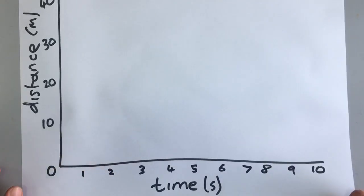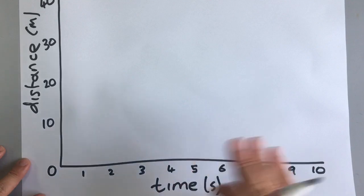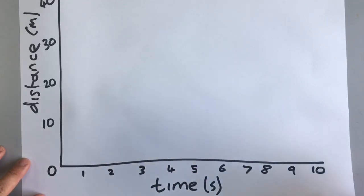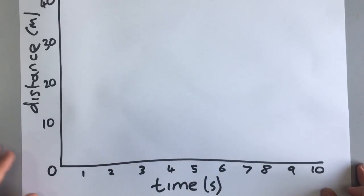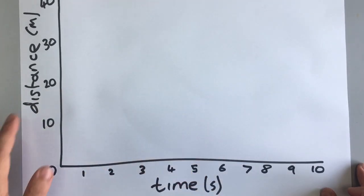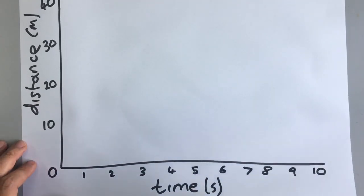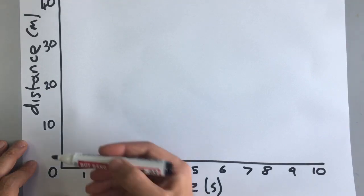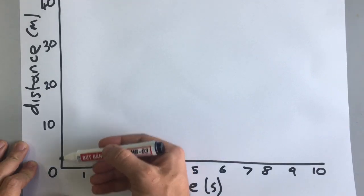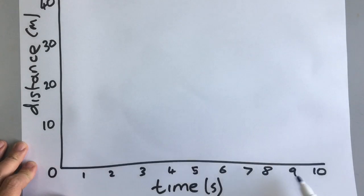A very useful way of representing motion — representing things moving — is to put it on a graph. There are two types of graph. The first one we are going to talk about is a distance-time graph, which shows how far something has travelled in how long.